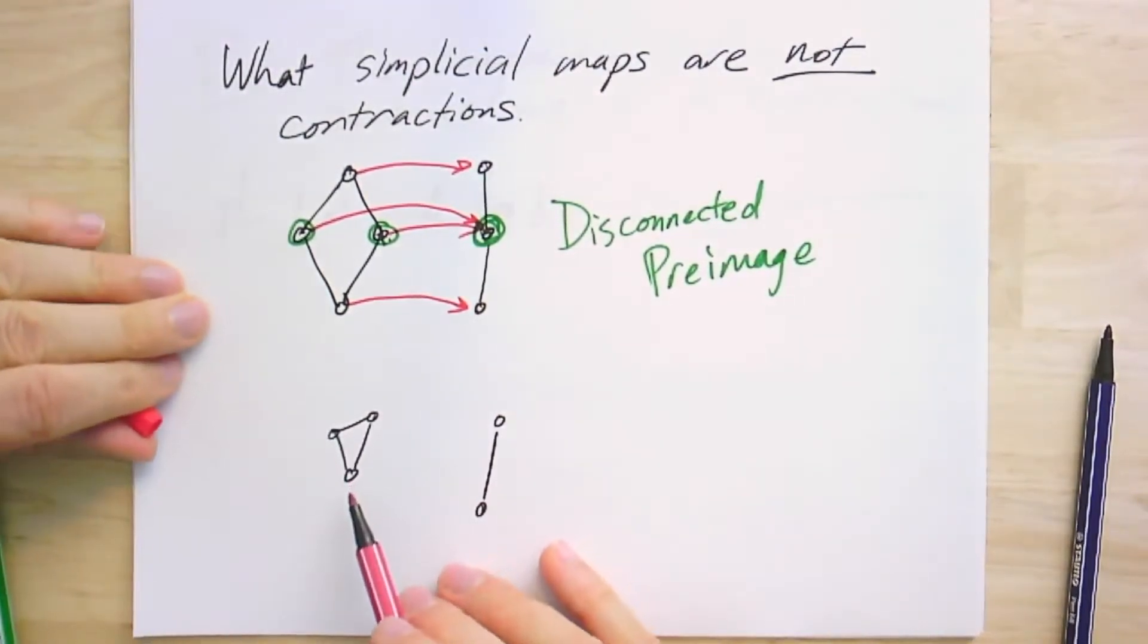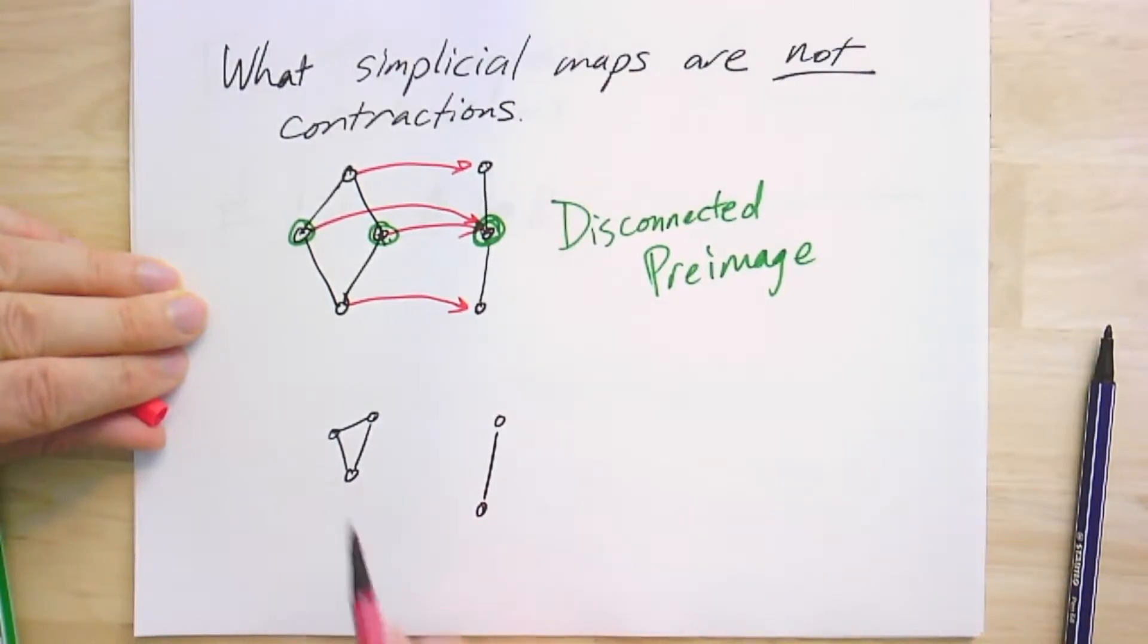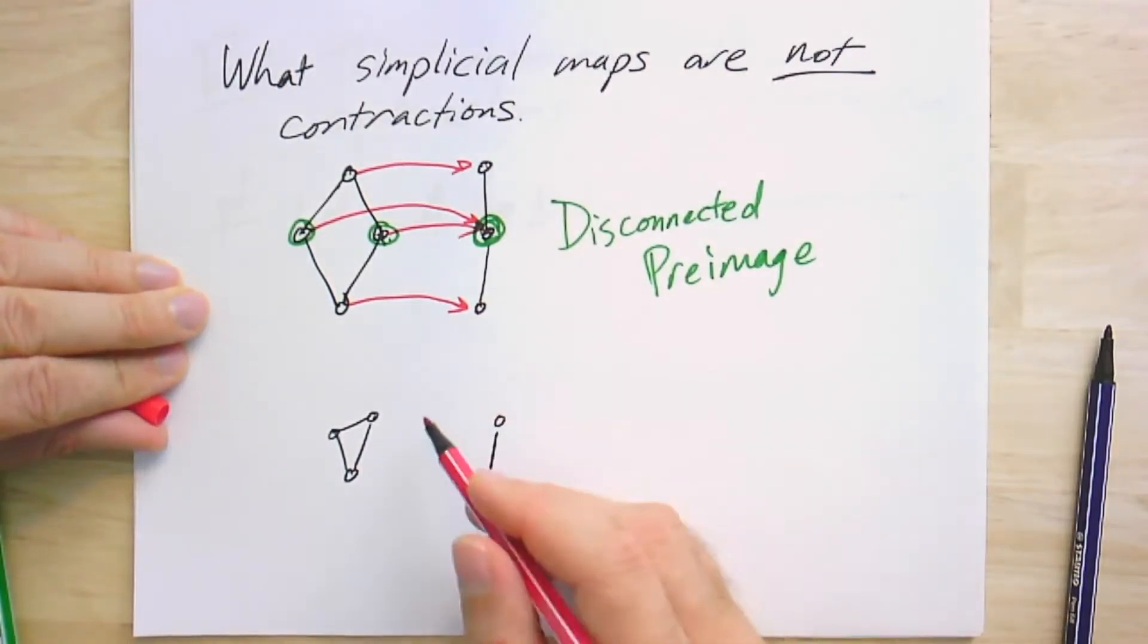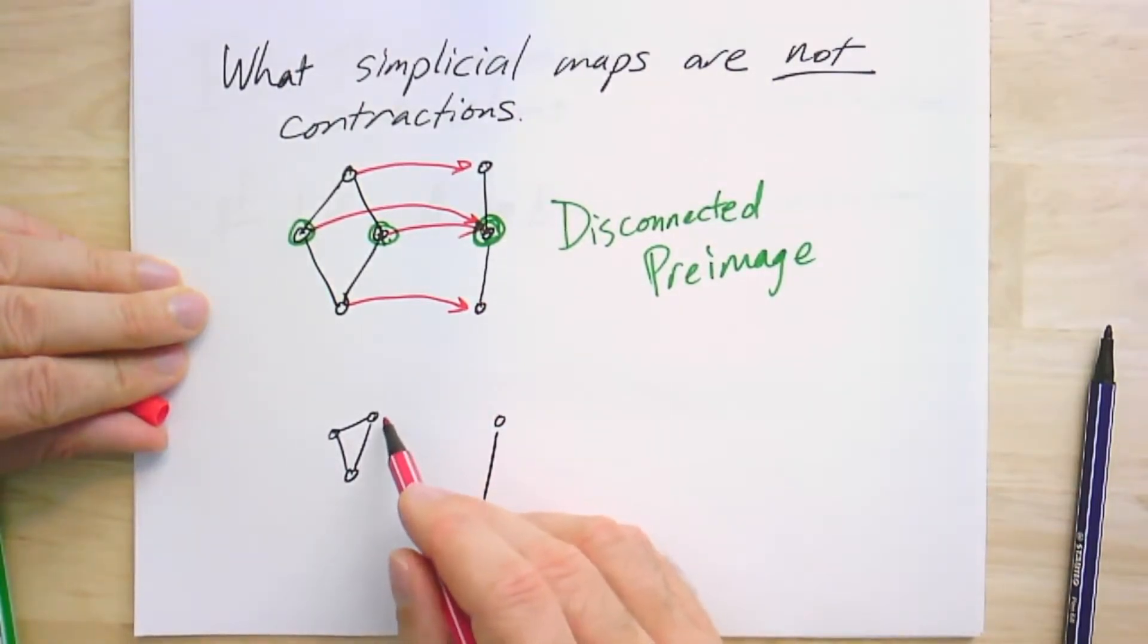Now, in this next case, there are examples of simplicial maps from this K3 to this P1 subgraph, which are contractions. There are contraction maps between here. However, there are also simplicial maps that might not be contractions.